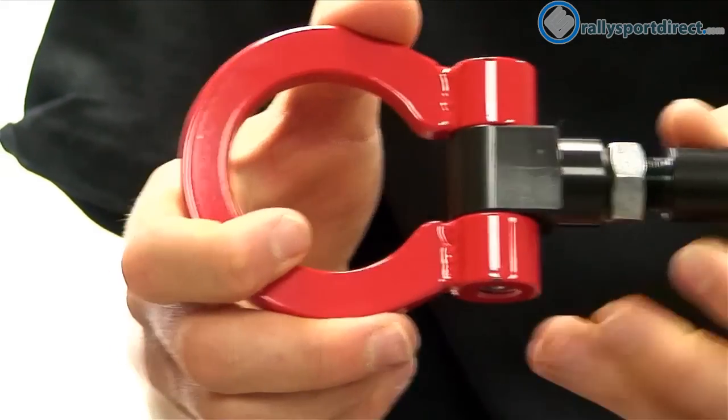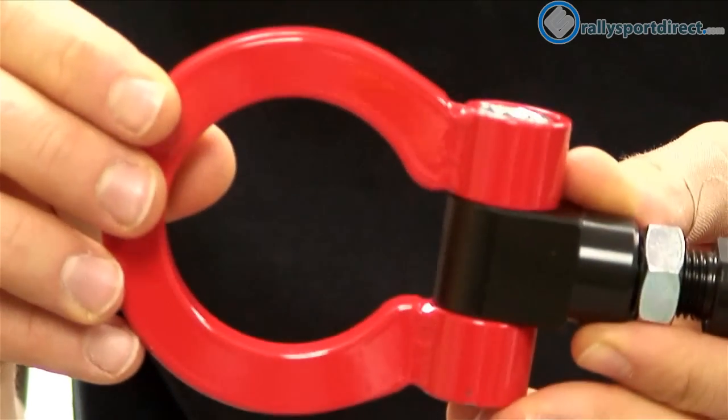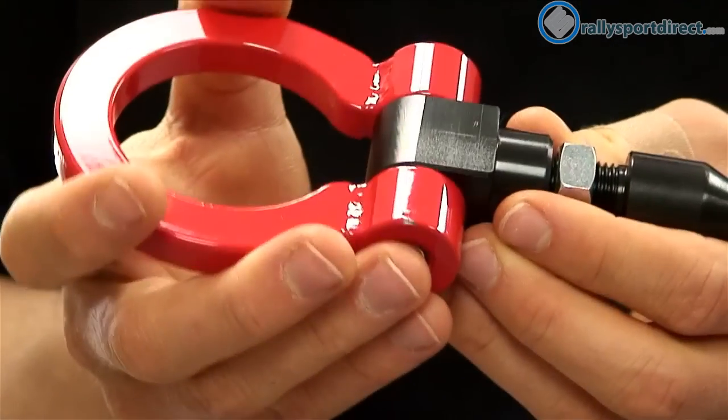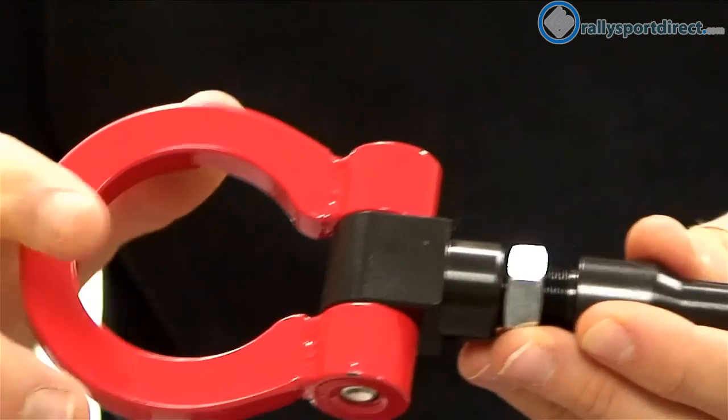Okay, so the different parts on here: of course we've got our loop, which is where the tow hook is going to attach to. Now this is painted red, you can see that there. This all feels like it's a very heavy steel, which is nice because this needs to take a lot of abuse if you're towing a vehicle out of the sand or something like that.